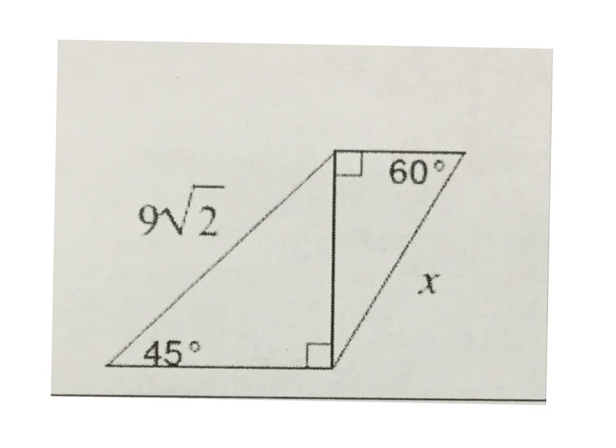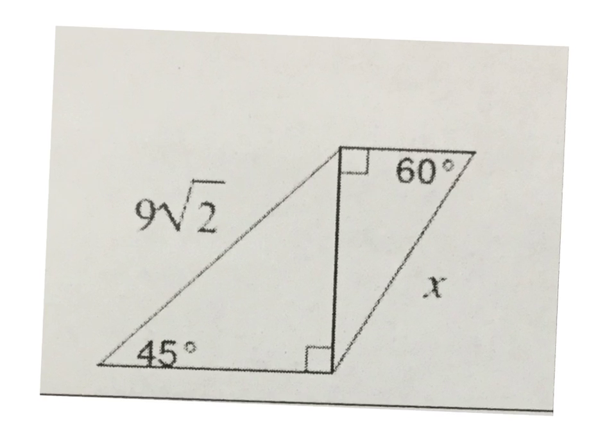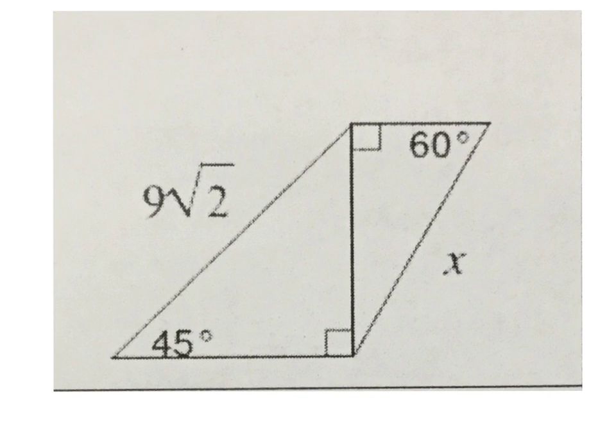Okay, so we use our brain and notice that 9√2 is the hypotenuse of a 45-45-90 triangle. Because the hypotenuse is 9√2, we should know from the relationship that both of the other legs have to be 9 units long.